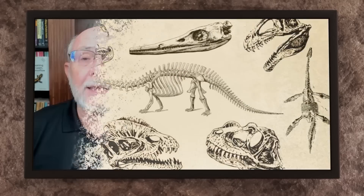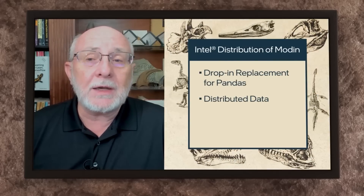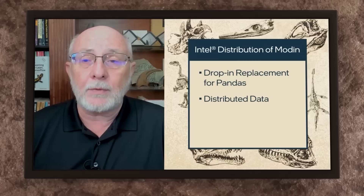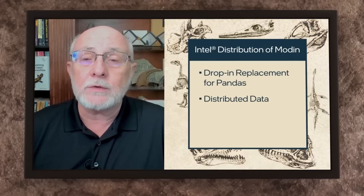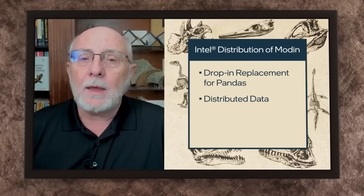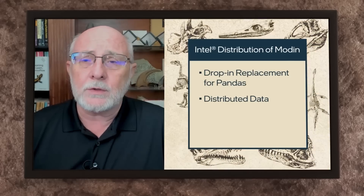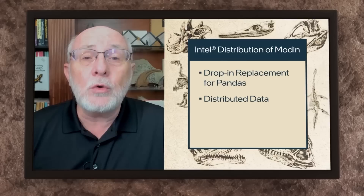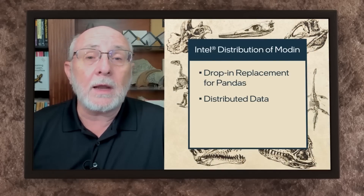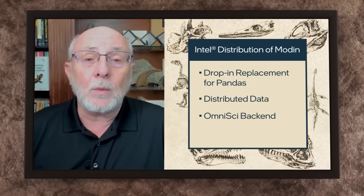We support data analytics, for example, with the Intel distribution of Modin, which is a library used as a drop-in replacement for pandas. It can be used for distributed data or for doing pandas-type operations across multiple nodes and also GPUs, and it provides very large speed-ups. Not all pandas functions are supported, but it may suit you for a given use case. It's based on an OmniSci backend, which you can read about at the OmniSci website.